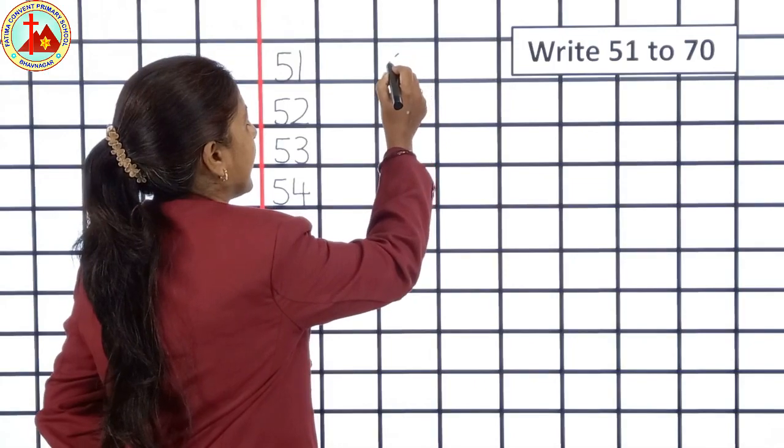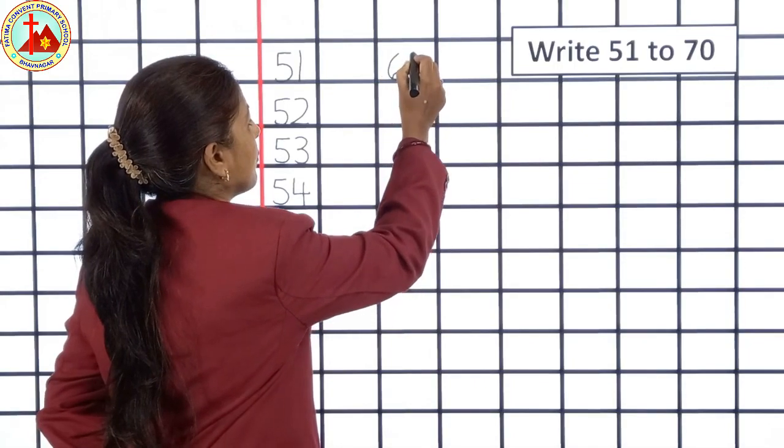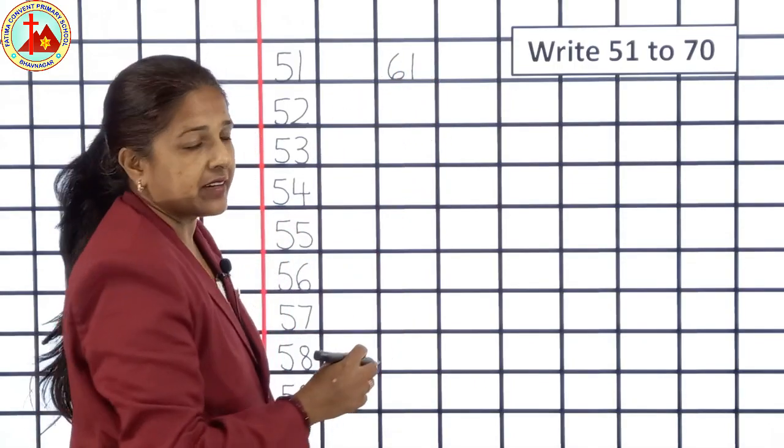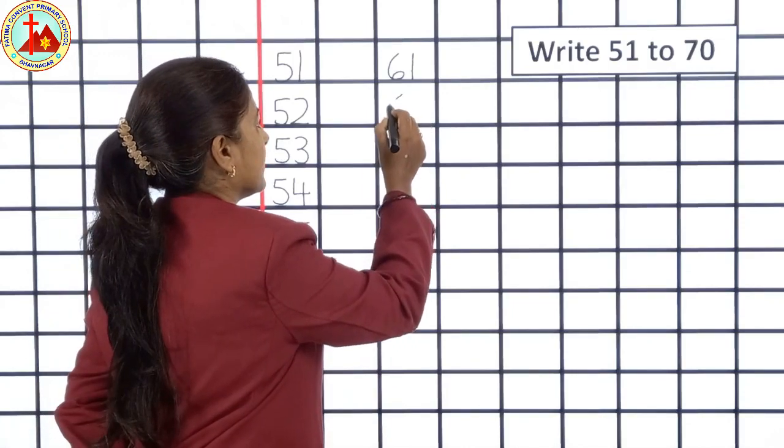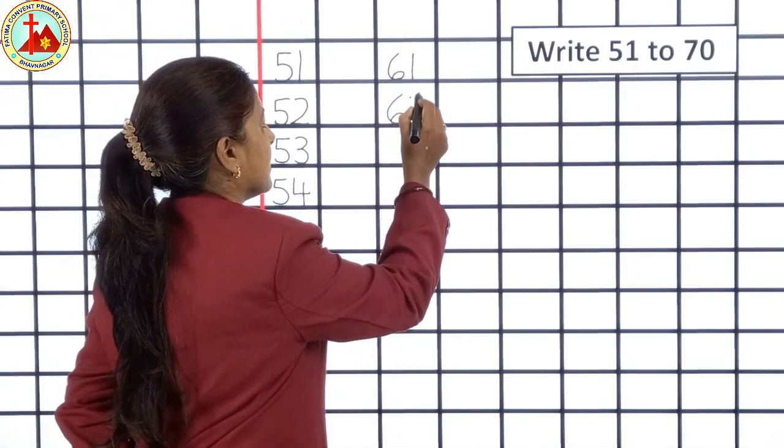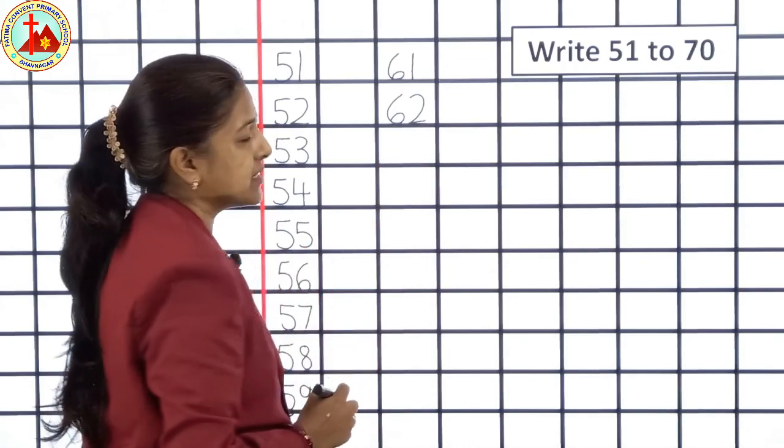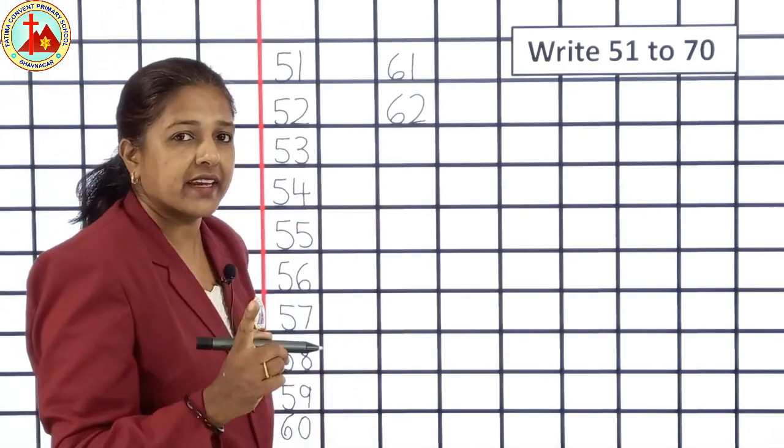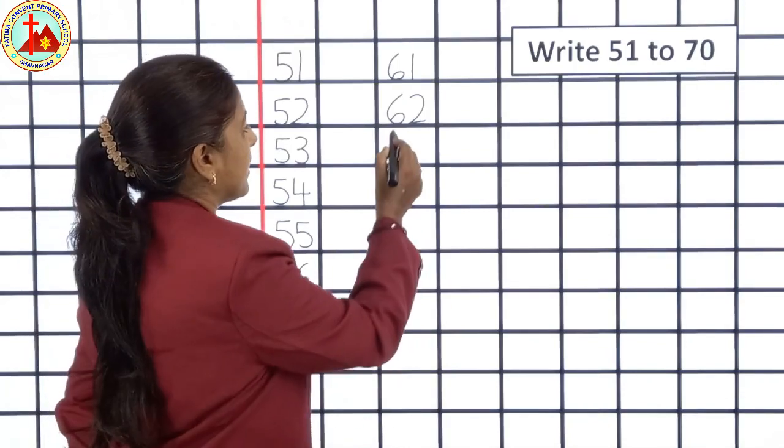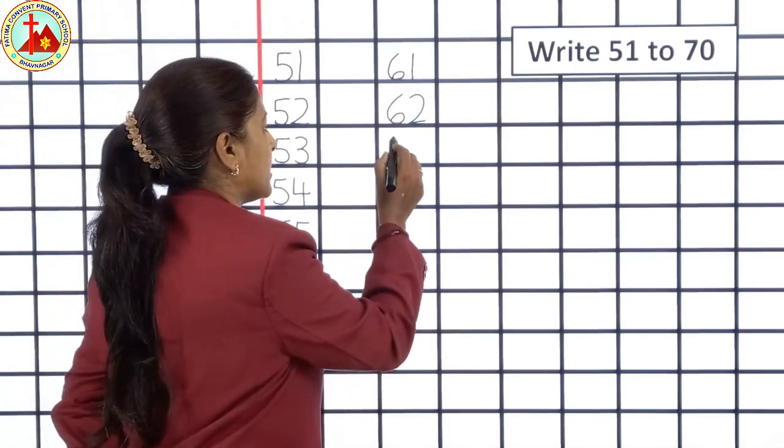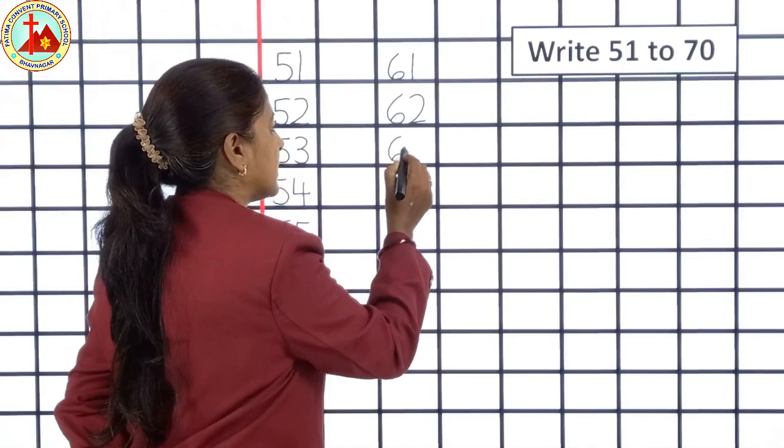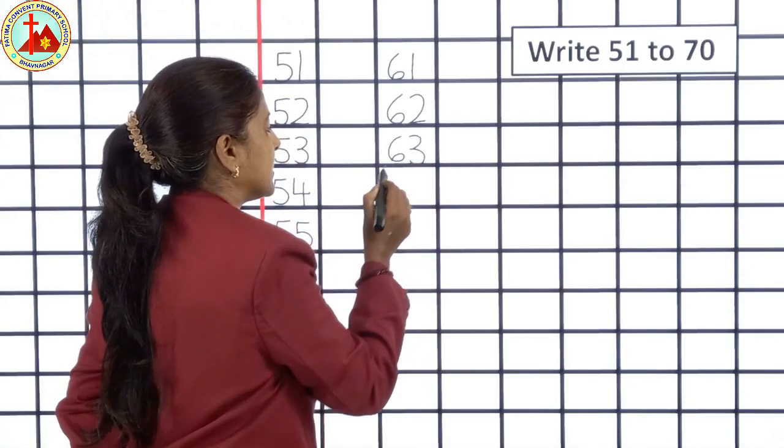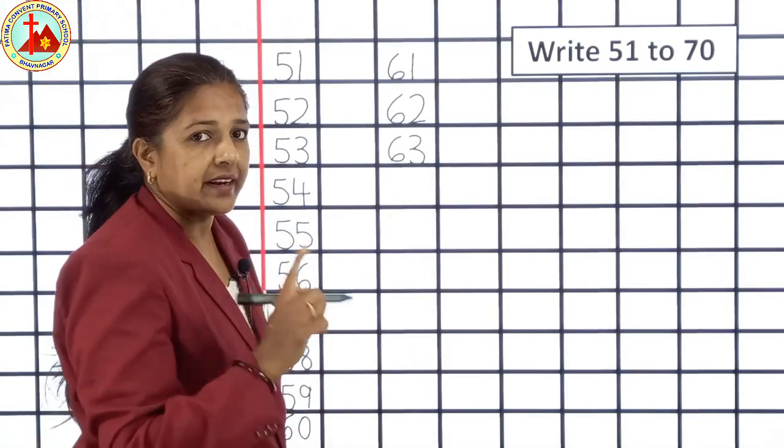Then, 6, 2, 62. Don't write fast, children. Write slowly and in a very good handwriting. After 62, 6, 3, 63. You have to say and write.